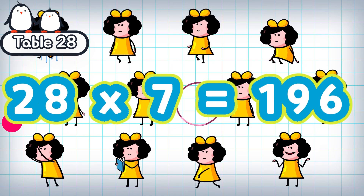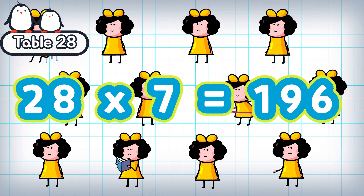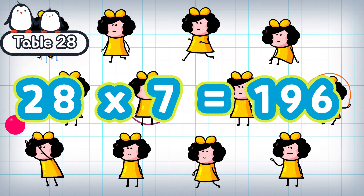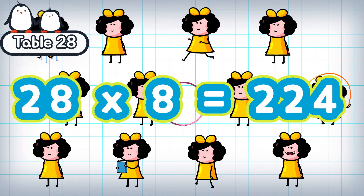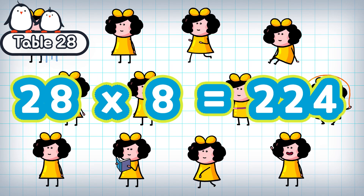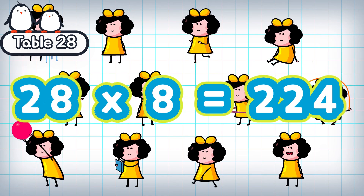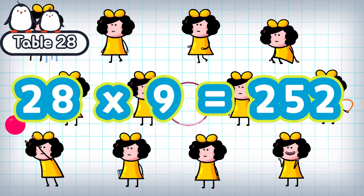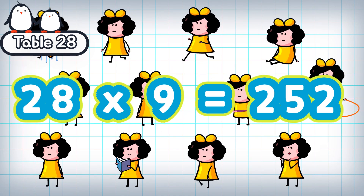28 times 7 is 196. 28 times 8 is 224. 28 times 9 is 252.